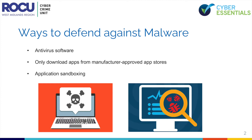We'll quickly recap what we covered in last week's video — the ways we can defend against malware. Firstly, there's antivirus software. Antivirus software is often included for free within popular operating systems and should be used on all computers and laptops. For office equipment you can simply click enable and you're instantly safer. Smartphones and tablets might require a different approach, and if configured in accordance with the NCSC's guidance, separate antivirus software might not be necessary.